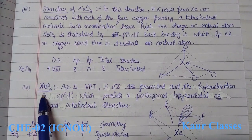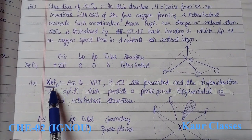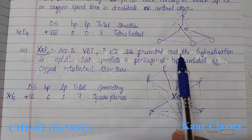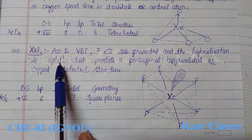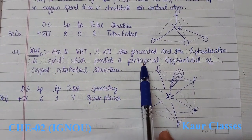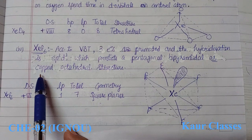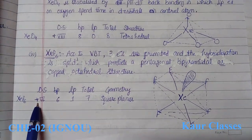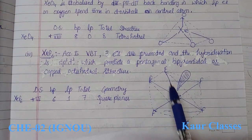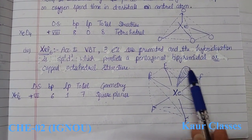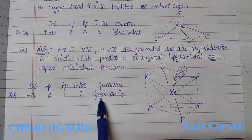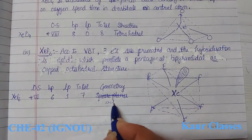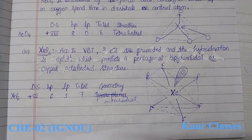The oxidation state of xenon in XeO4 is +8. The last compound is xenon hexafluoride (XeF6). Three electrons are promoted, giving sp3d3 hybridization and a pentagonal bipyramidal or capped octahedral structure. The oxidation state is +6, with six bond pairs and one lone pair. The geometry is distorted octahedral.